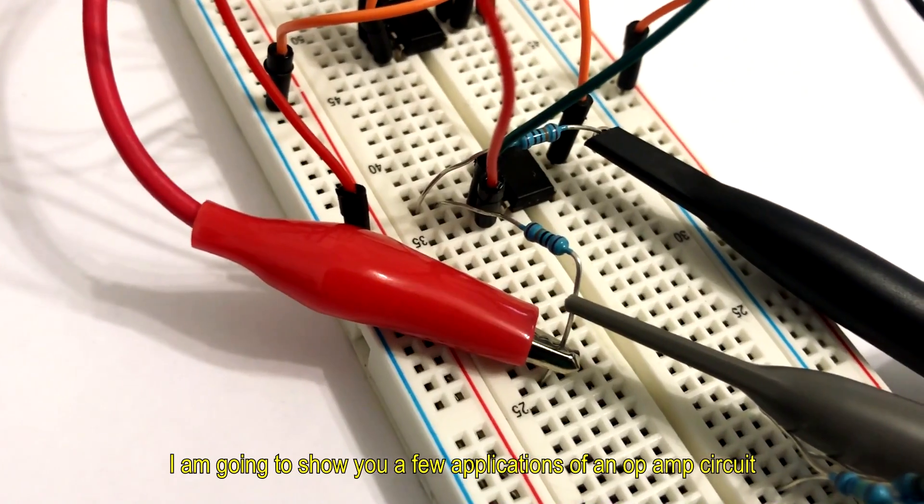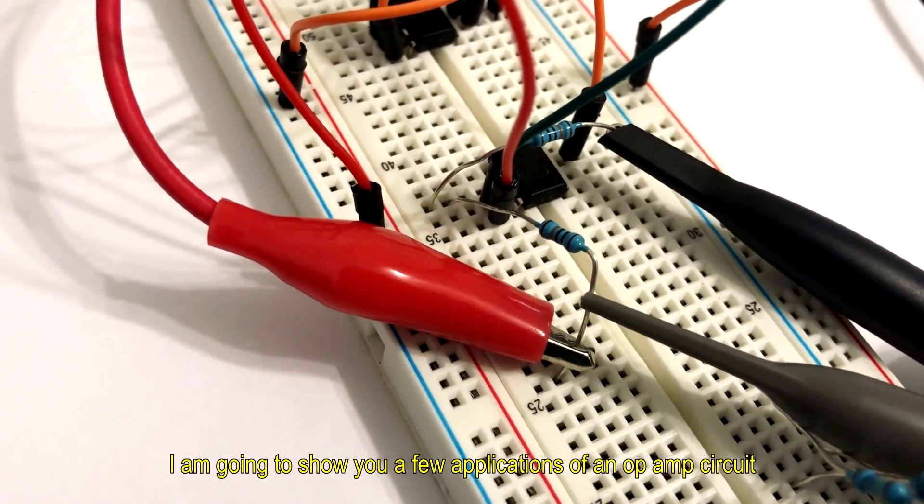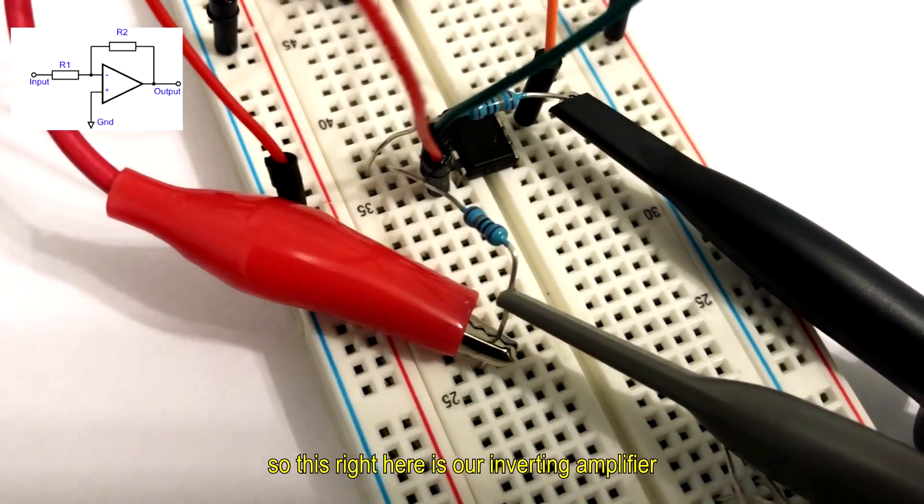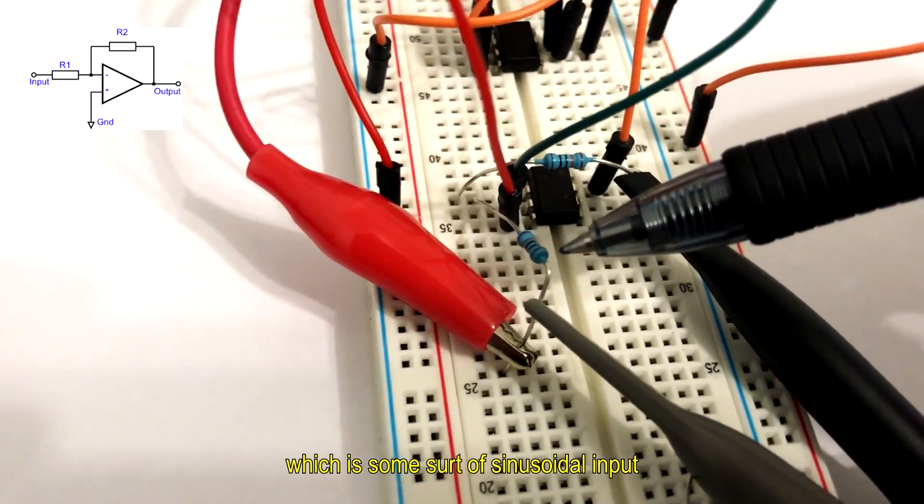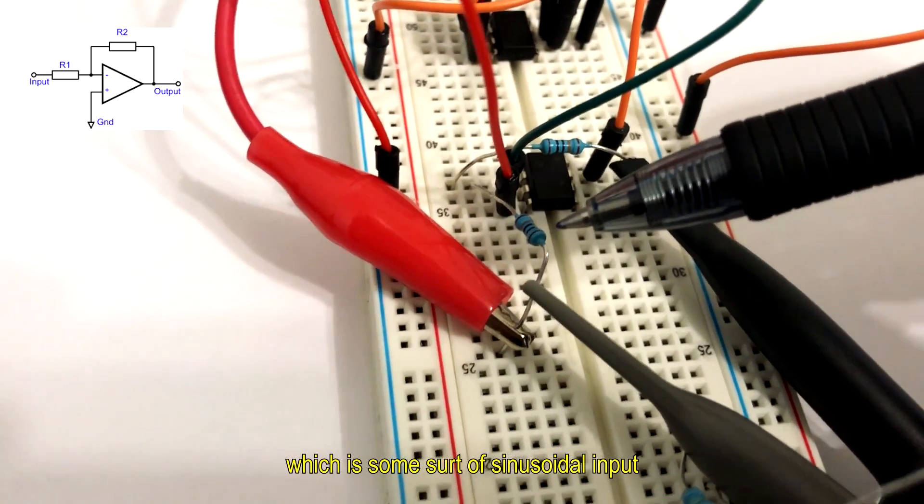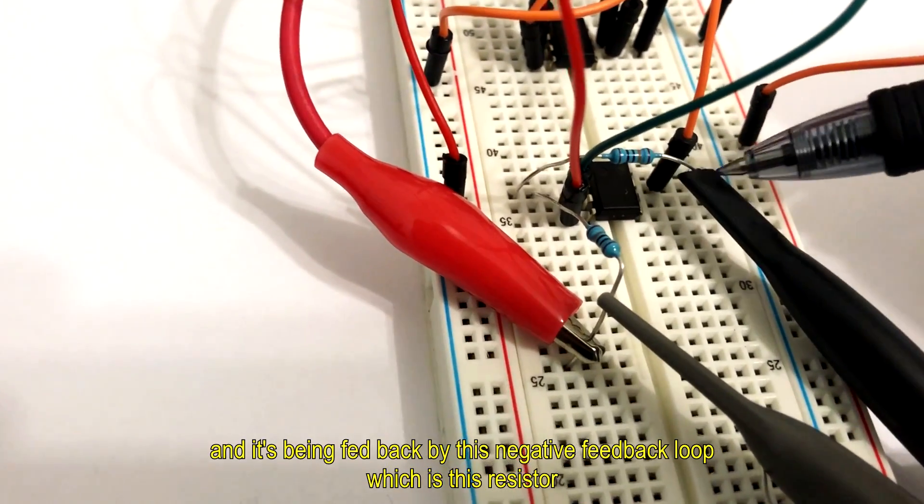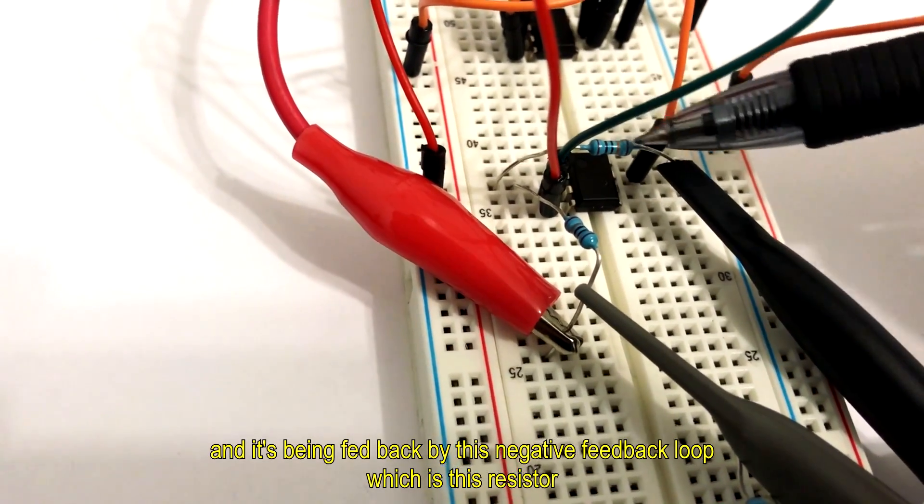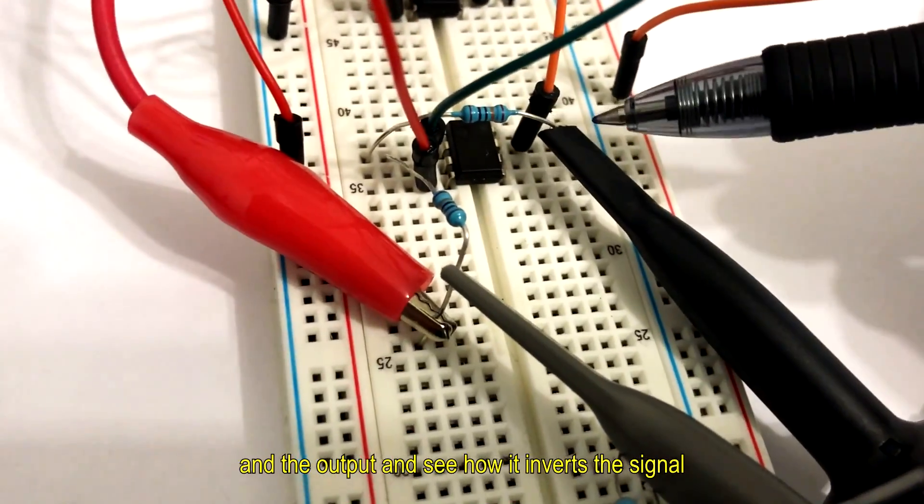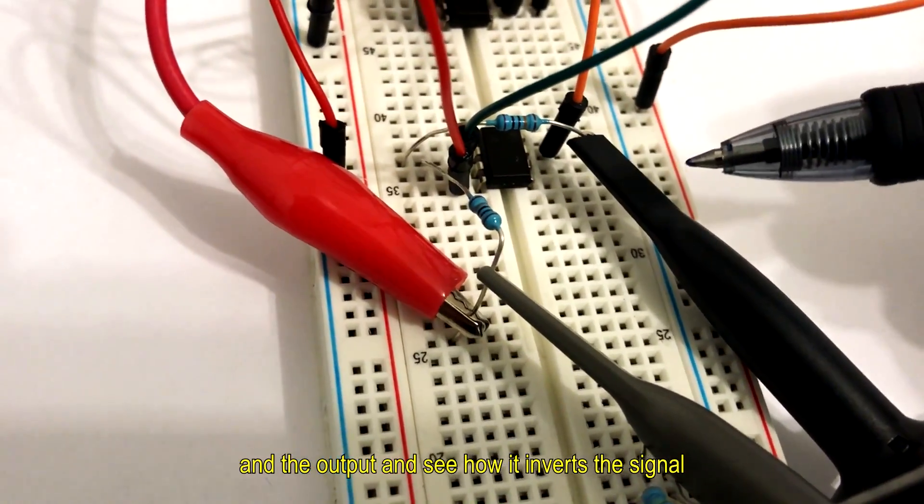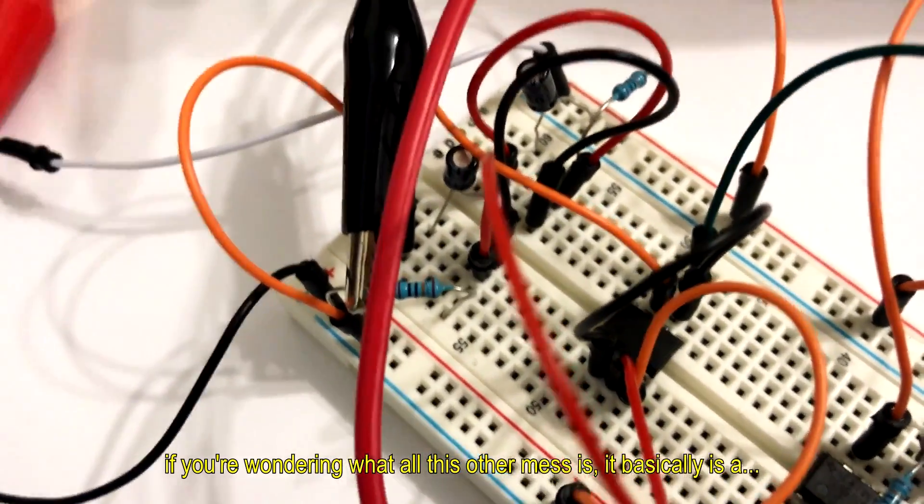I'm going to show you a few applications of an op-amp circuit. So this right here is our inverting amplifier. What is being shown is this input which is some sort of sinusoidal input. And it's being fed back by this negative feedback loop which is this resistor. So I'm measuring the input and the output and see how it inverts the signal.